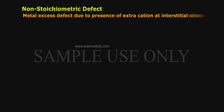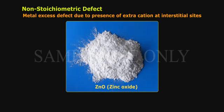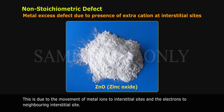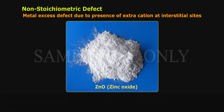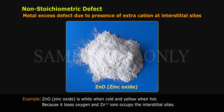Metal excess defect due to presence of extra cations at interstitial sites. This is due to the movement of metal ions to interstitial sites and electrons to neighboring interstitial sites. For example, ZnO (zinc oxide) is white when cold and yellow when hot, because it loses oxygen and Zn²⁺ ions occupy the interstitial sites.